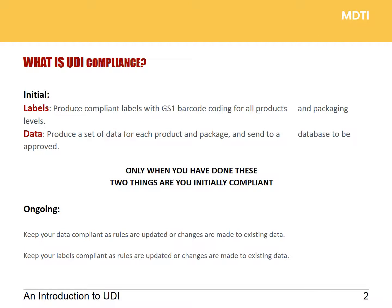So if we start off with what is UDI compliance — just to clarify, it's compliant labels with GS1 barcoding for all products and packaging levels, produce a set of data for each product and package and then send that data to a national database to be approved. Once you've done those two things you've achieved compliance. Ongoing, it's keeping the data compliant as rules are changed or you change your data, and keeping your labels compliant as rules are updated or you make changes to your existing data.